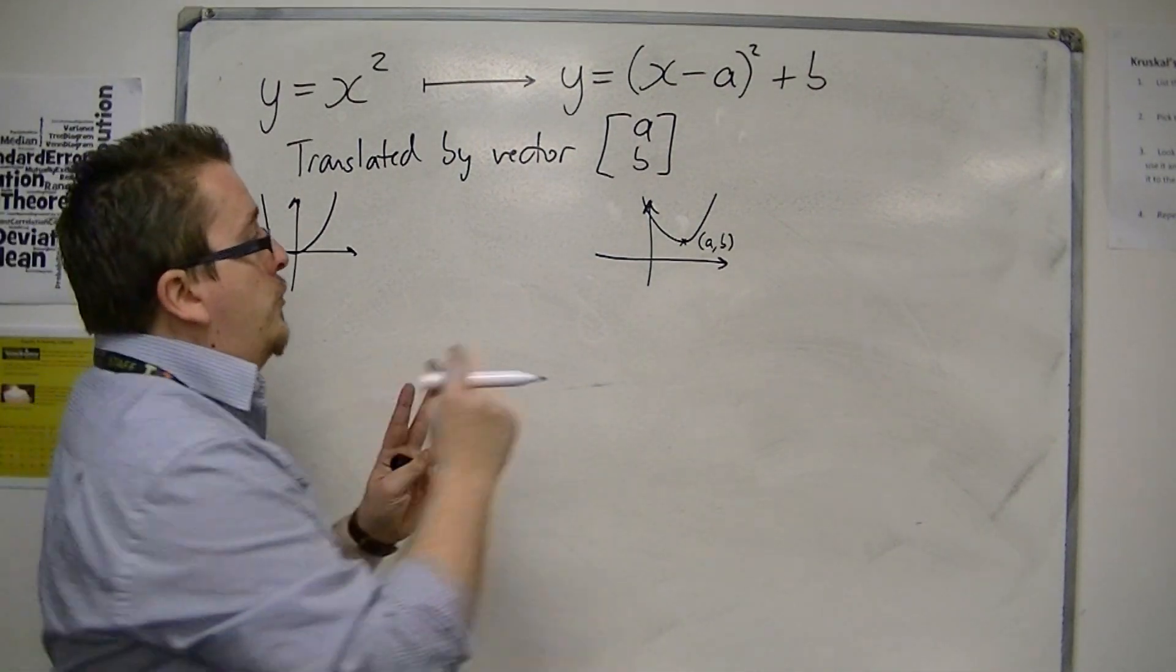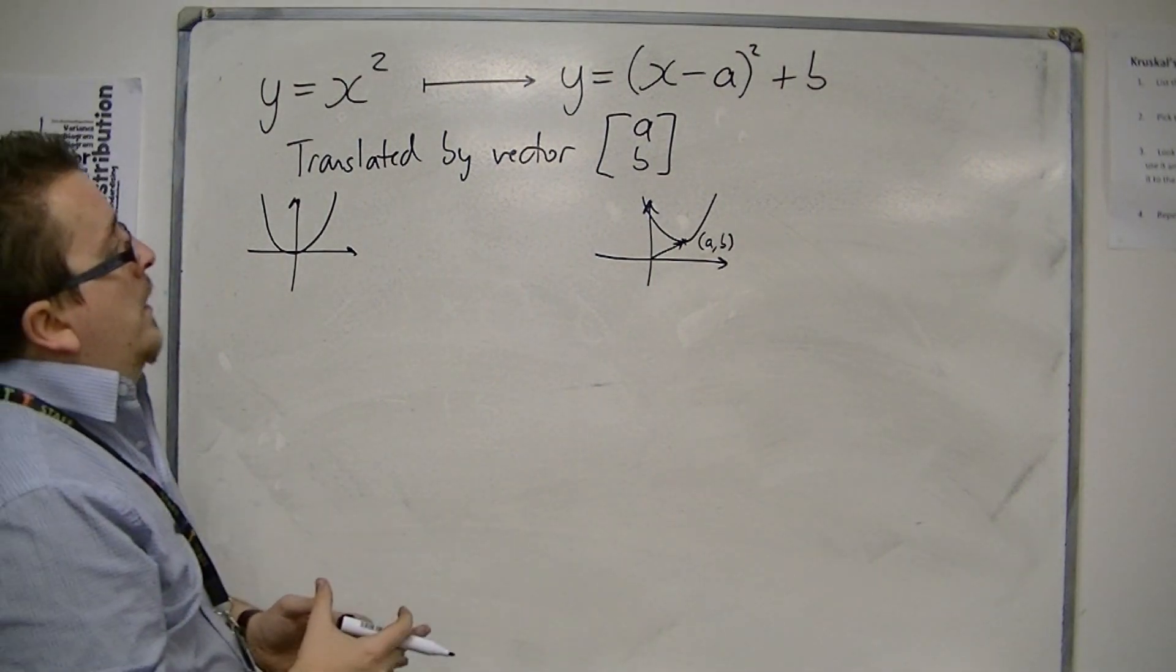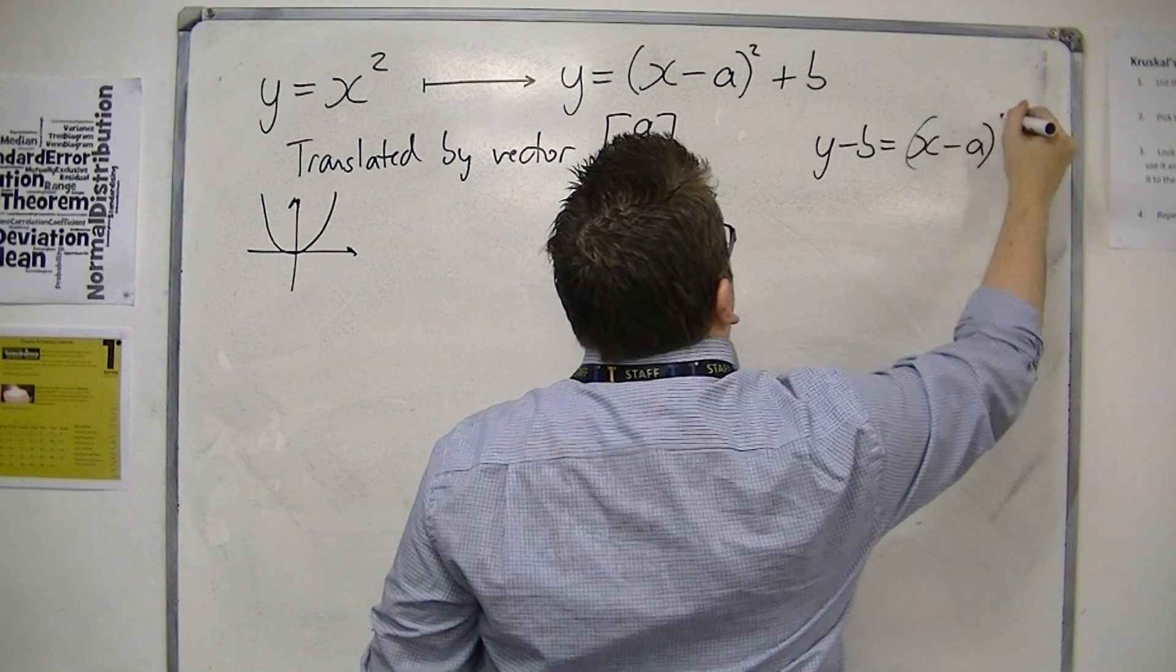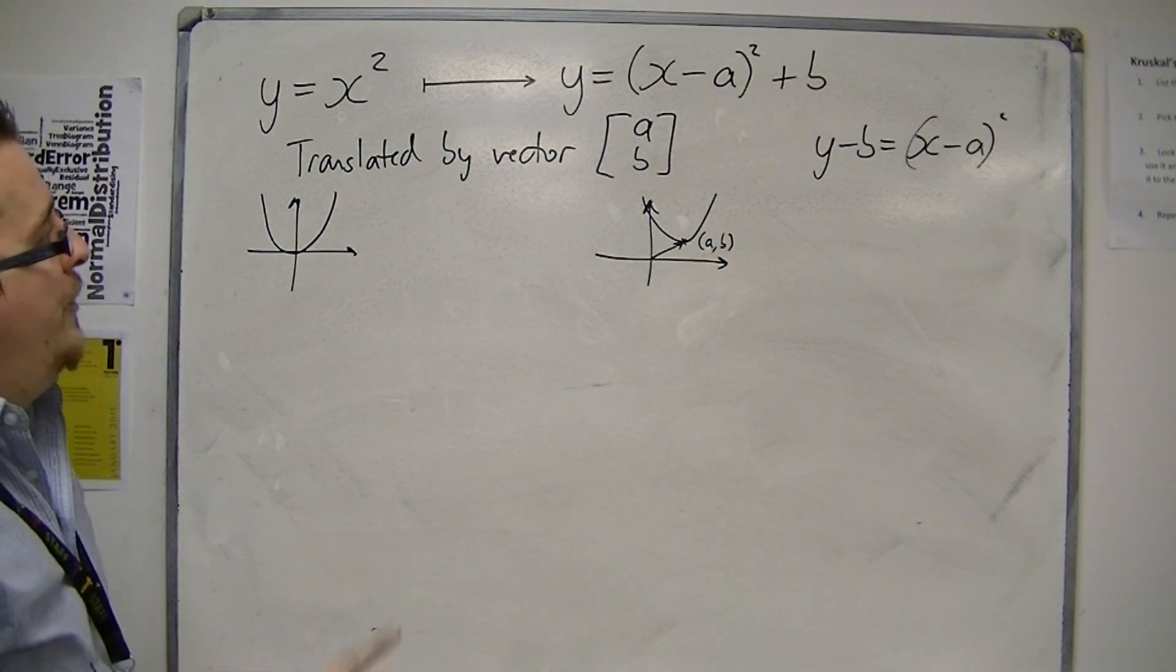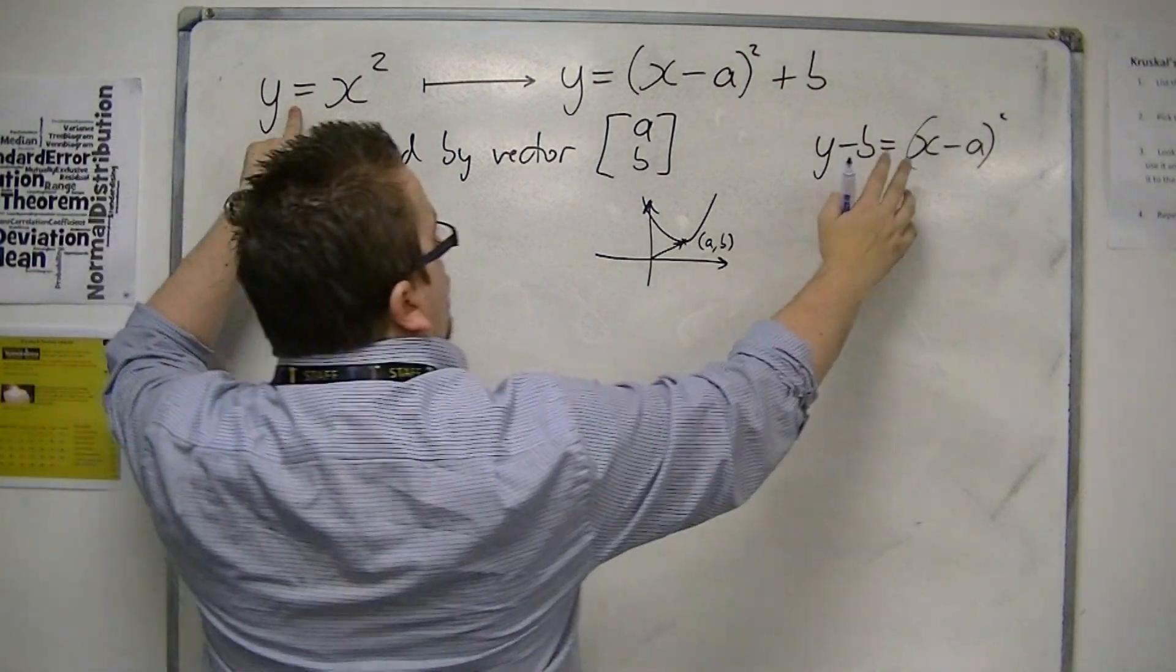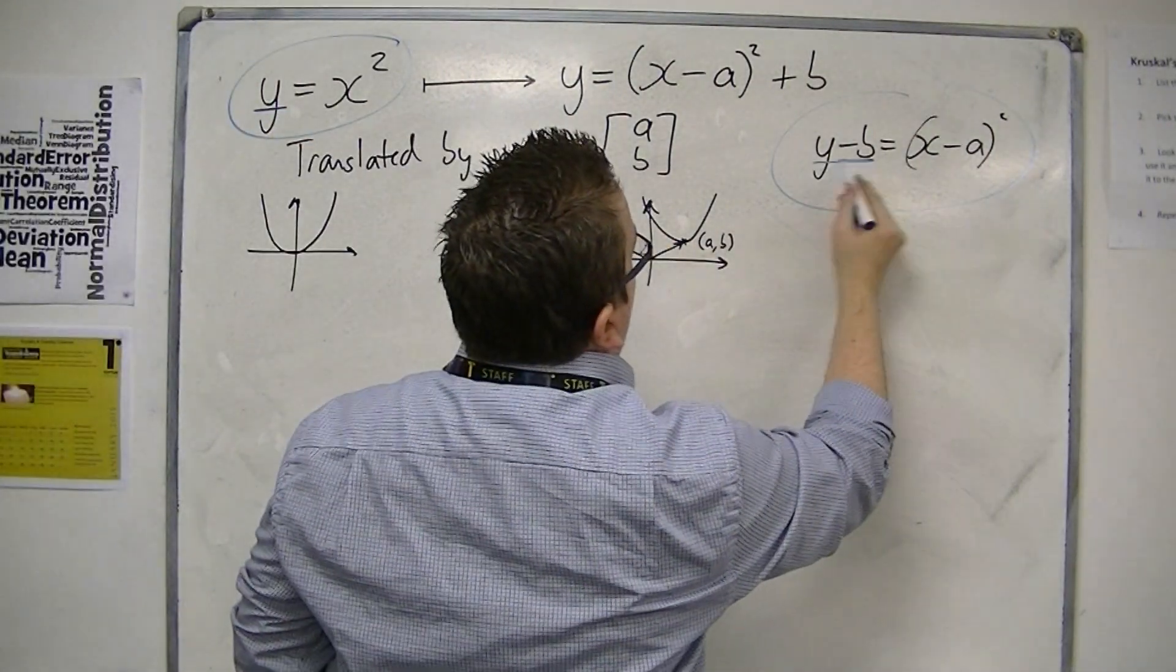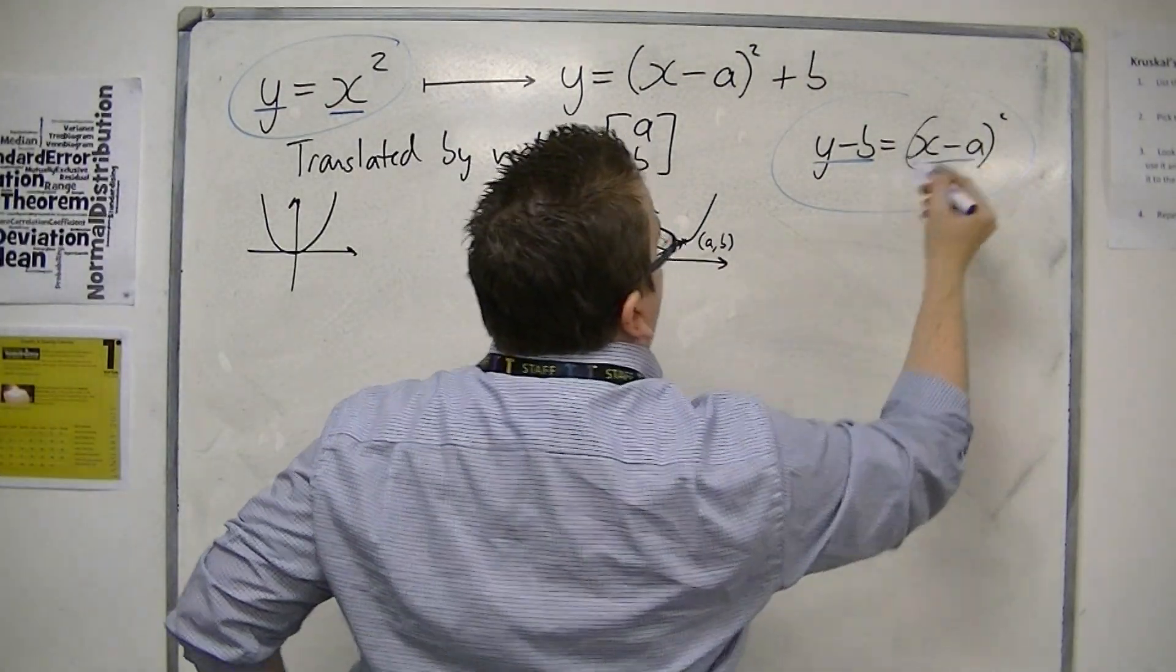So this translation vector moved the vertex. Now, if we take b from both sides, it becomes clearer that if you compare it with the original equation, then the y has changed to y minus b, and the x has been replaced with x minus a.